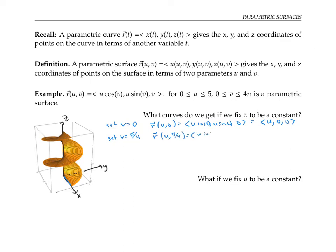If we set v equal to π/4, we get r of u, π/4, which is u cosine(π/4), u sine(π/4), π/4, which simplifies to (√2/2)u, (√2/2)u, π/4. That's a line at constant height π/4. And since the x-coordinate equals the y-coordinate, we're lying along the line y equals x at a height π/4.